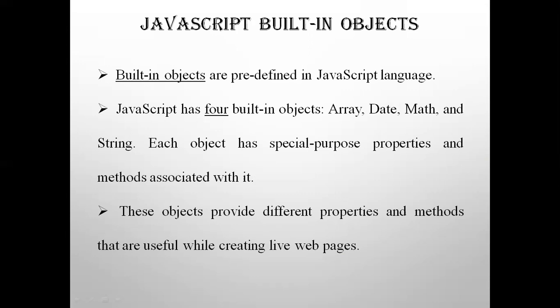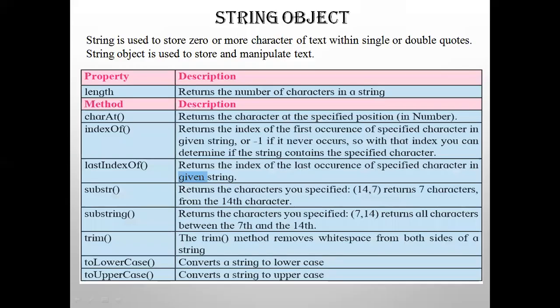Every object's properties and methods we will be learning associated with it. These objects provide different properties and methods that are useful while creating live web pages. Built-in objects are used for simple data processing in JavaScript. Today we are going to study two built-in objects: the string object and the number object.